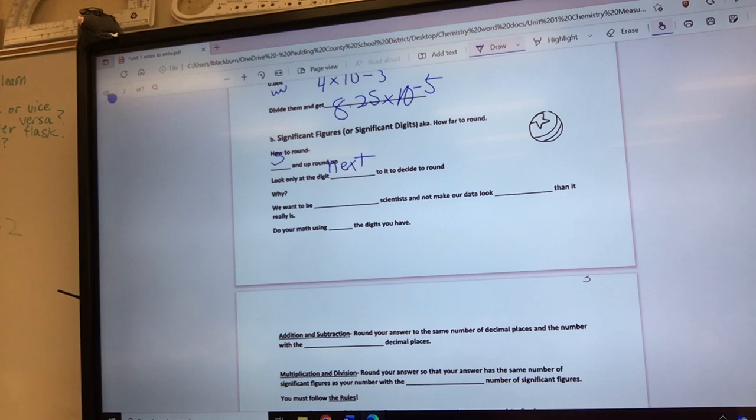If I wanted to know if I leave this a 2 or round it up to a 3, you would only look at the 4. Does the 4 round the 2 up or leave it alone? It leaves it alone because it's less than 5. Does that make sense to you?